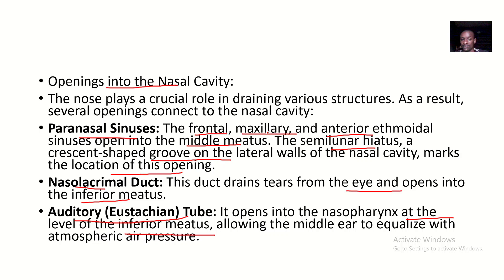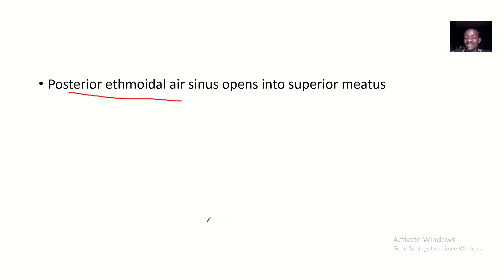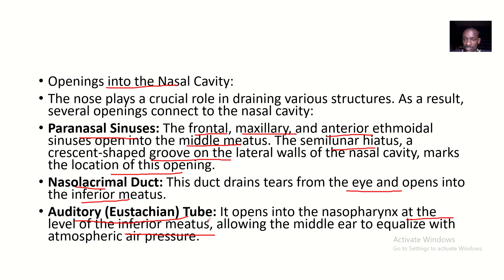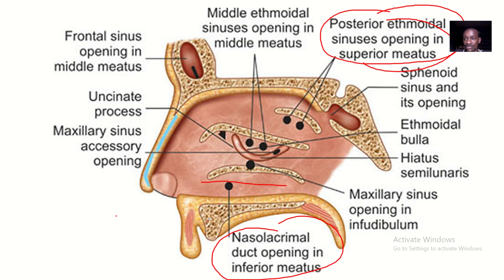So to summarize: the middle meatus receives the most — the frontal, maxillary, and anterior ethmoidal sinuses all open into the middle meatus. The nasolacrimal duct is inferior meatus, the auditory tube is inferior meatus, and the posterior ethmoidal sinus opens into the superior meatus. I showed you everything on the pictures — that's it. If you don't understand, kindly play this video again. Bye for now.